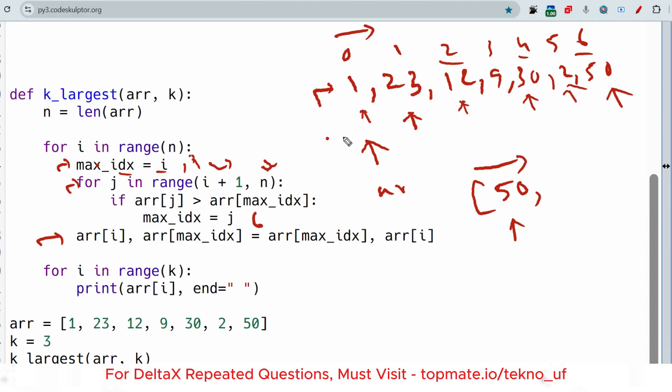It will keep checking if the array j-th value is greater than the array max_idx value. At the end of the for loop, it will have the largest value from this value to the last value. If it found a max value, then it will swap the value with the second and the max value. This way we are swapping the values and getting the largest value at the first and lowest value at the end.